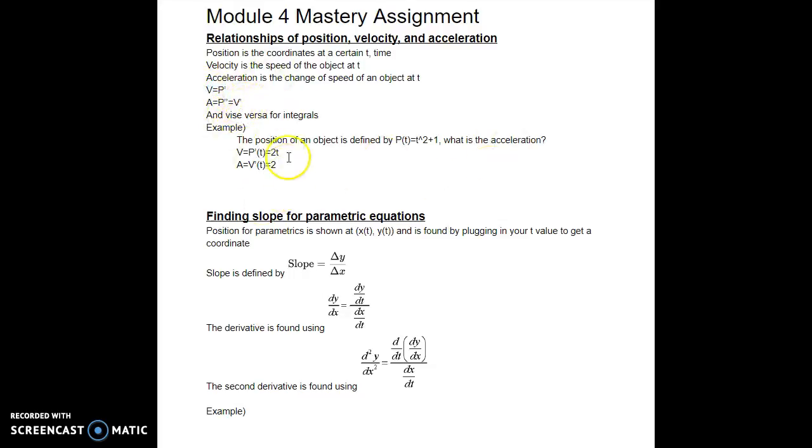So an example, the position of the object is defined by position equals t squared plus 1. So what is acceleration? First you take the first derivative and you get velocity, which is 2t. Then you take the derivative of velocity and you get 2. So it's a pretty simple concept, but it's very necessary for solving many problems.